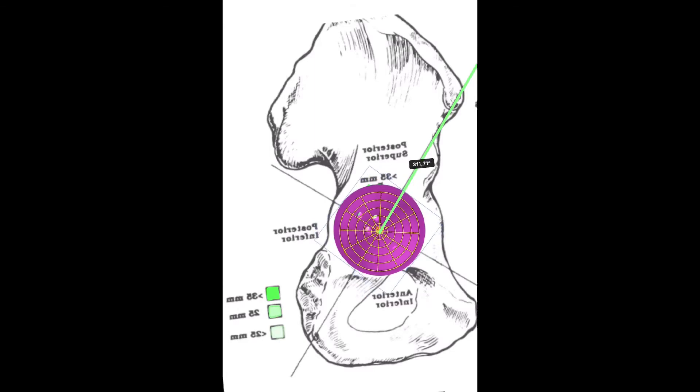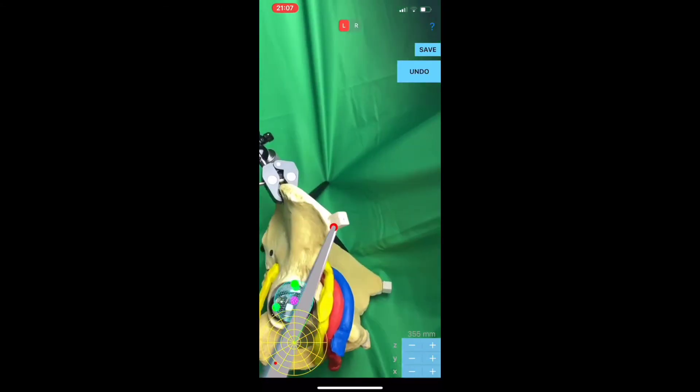In commercial acetabular cups, three screw hole openings are designed to direct the inserted screws to follow certain bearings, ensuring safety and facilitating at least two deep screw purchases of bone stock simultaneously.